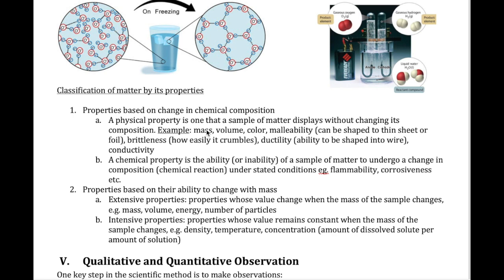There are also chemical properties — properties we can only find out by changing the chemical nature of the substance. For example, if I burn paper, I'm changing its chemical nature. The cellulose that makes up the paper no longer exists because I'm reacting it with oxygen to convert it into something else. So flammability is considered a chemical property. Different substances burn differently — water doesn't burn at all, while paper burns pretty easily. Volume and electrical conductivity, by contrast, are physical properties.